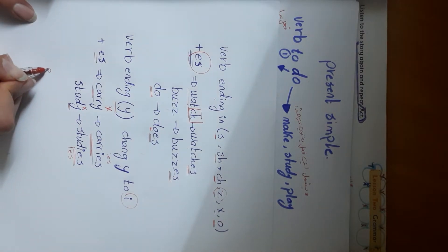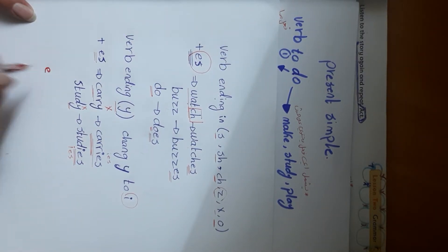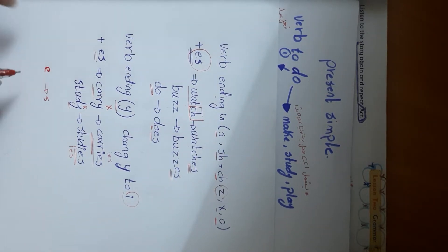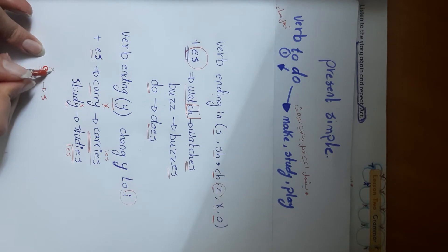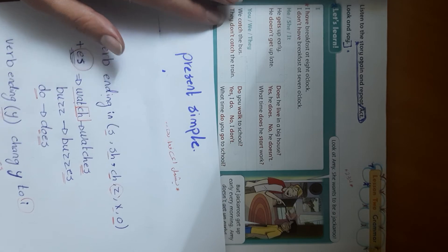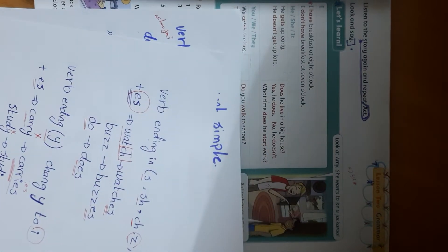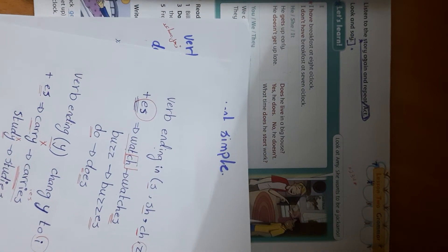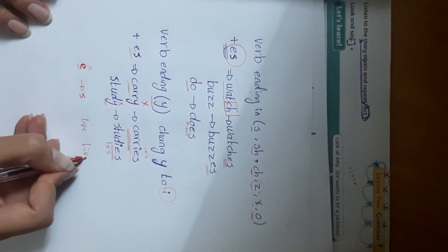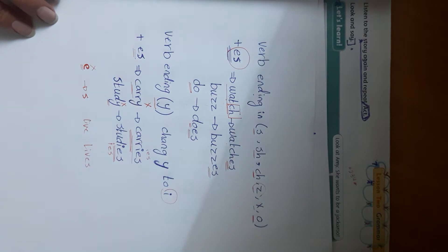For verbs whose ending already has a vowel before the 'y,' we just add 's.' For example, the verb 'love' — we just add 's' and it becomes 'loves.' There is no need to repeat or change anything.